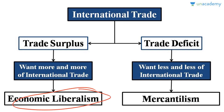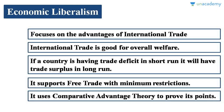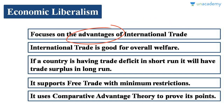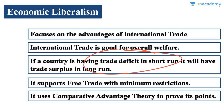These are the two theories of international trade we are going to see today. Economic liberalism is adopted by those countries which have trade surplus. This theory says that international trade is advantageous and more international trade should happen — it is good and brings overall welfare. If a country is having trade deficit in the short run, this theory says it will have trade surplus in the long run.